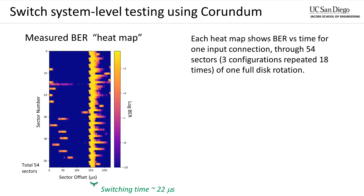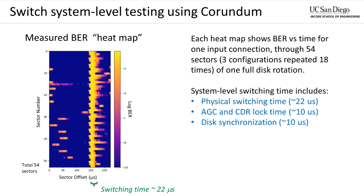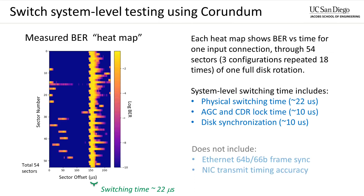From the heat map, we can see the physical layer switching time, comprising not only the switching time of the optical switch itself, but also the automatic gain control and clock data recovery lock times at the receiver. Since this measurement is performed with continuous PRBS data, it does not include the 64B/66B frame sync from the line code or NIC transmit timing accuracy. Some of the transitions are significantly extended, indicating optical power variation. We can also see some localized defects in the gratings. This technique enabled us to identify fabrication issues in the switch disk that can be corrected in the next version.